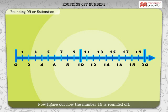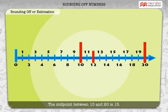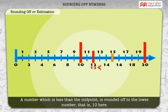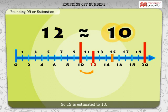Now figure out how the number 12 is rounded off. The number 12 comes between 10 and 20. The midpoint between 10 and 20 is 15. A number which is less than the midpoint is rounded off to the lower number — that is 10 here. So, 12 is estimated to 10.